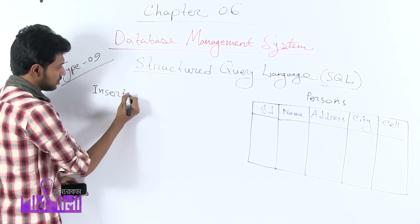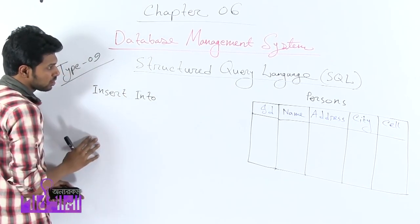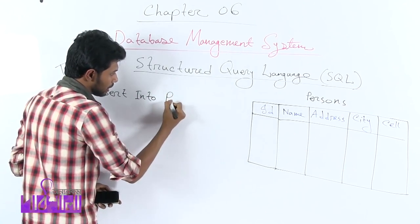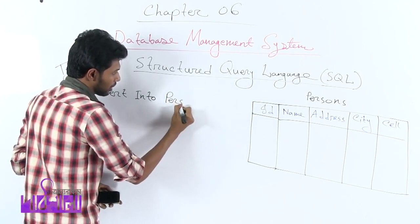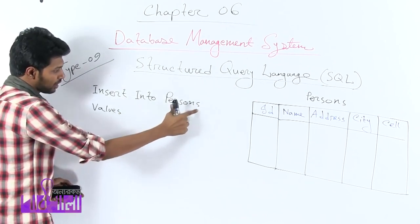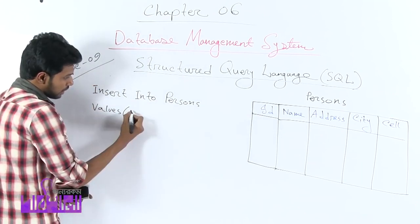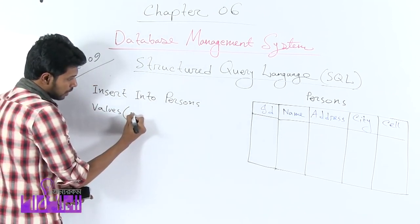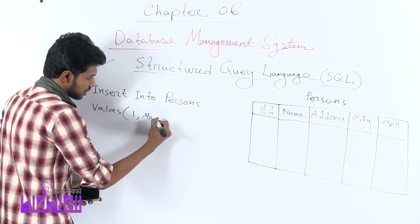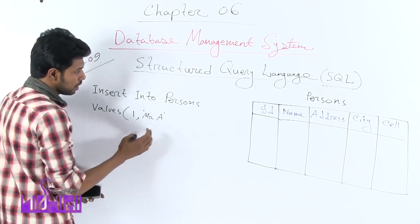The INSERT INTO statement — let's see this statement. Insert into, then the table name — whichever table you want to insert into, write that table name. Insert into persons, then values. Insert into, then the table name, then values, then which values to insert: ID, okay, fine. I am writing here — ID value is one.